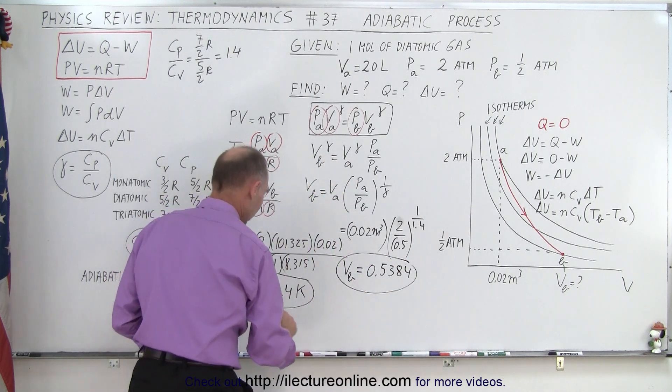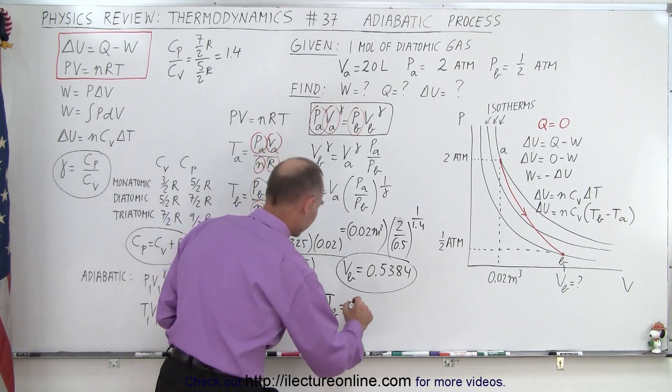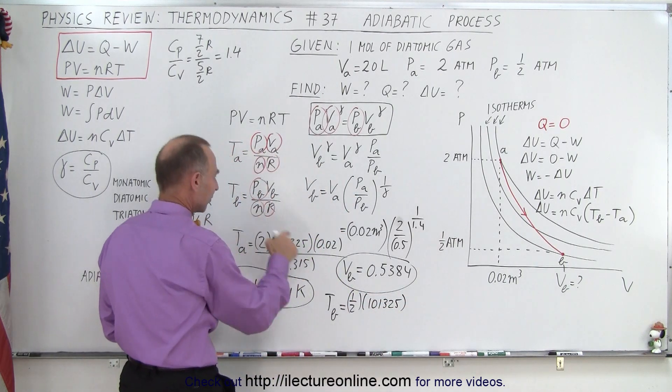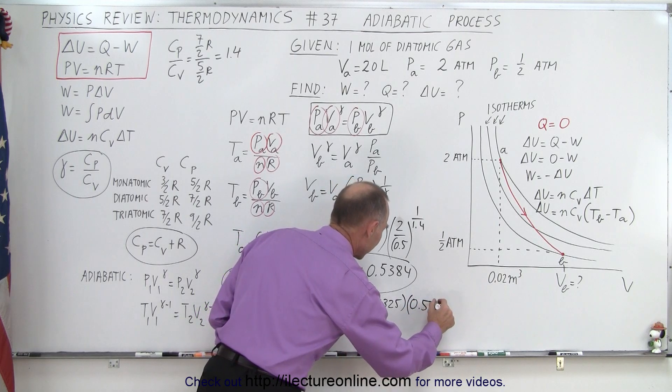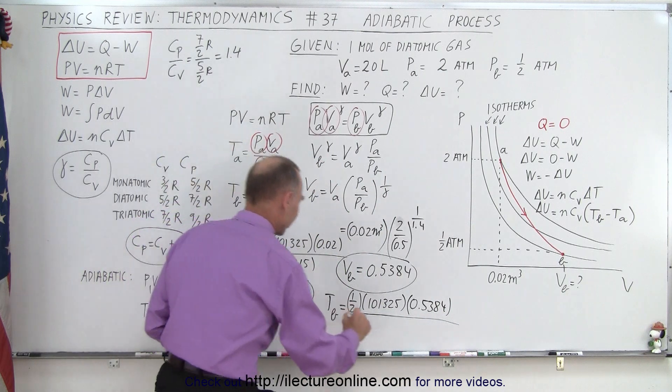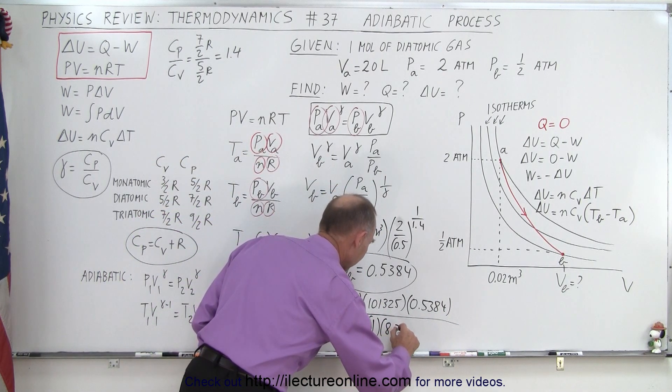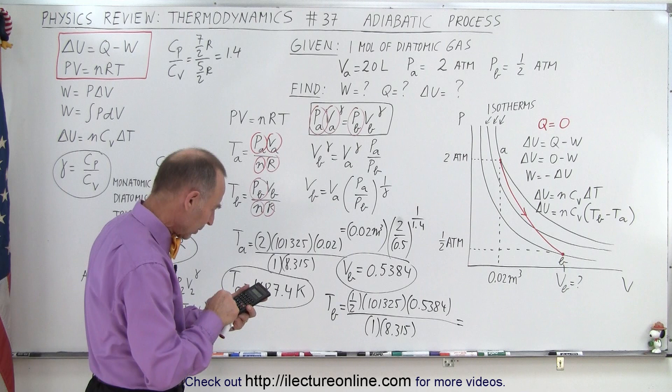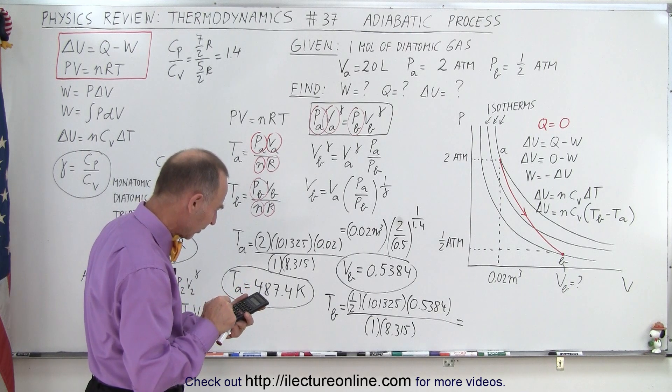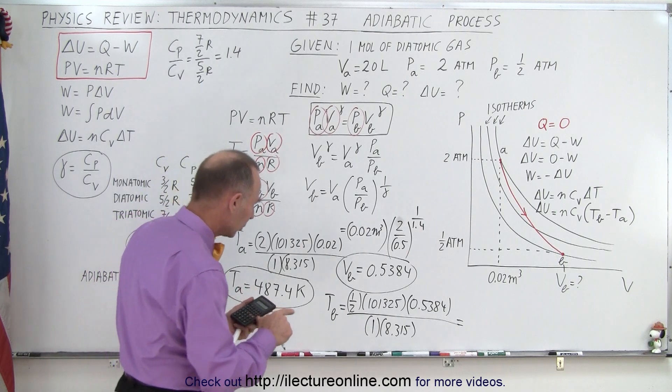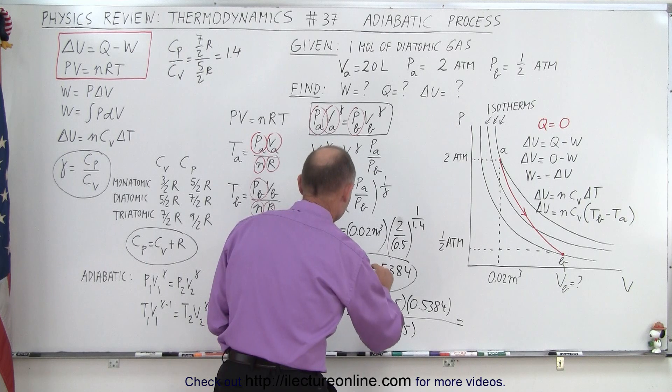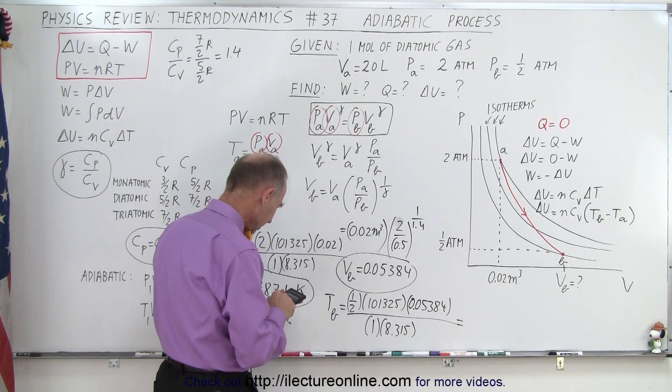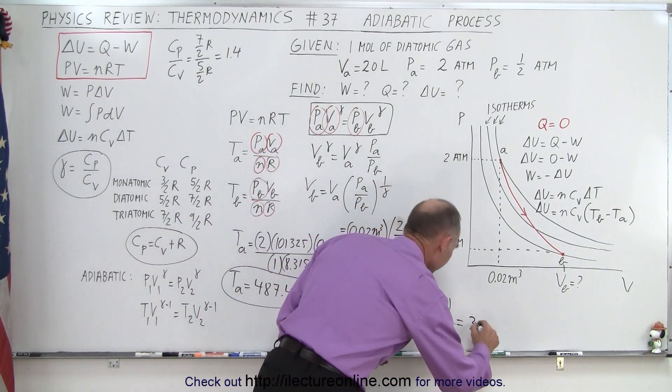And that then gets plugged in here, so now we have temperature at B, is equal to pressure at B, which is 1.5 times 101,325, times volume at B, which is 0.5384, divided by number of moles times R. So times 1.5 times 101,325 divided by 8.315 equals, and we're missing a zero here. There we go. And so, divided by 10, so we get 328 Kelvin.